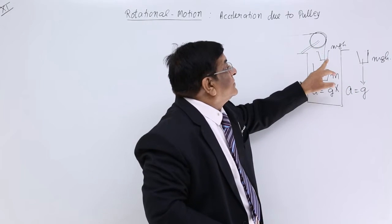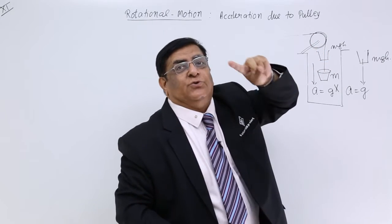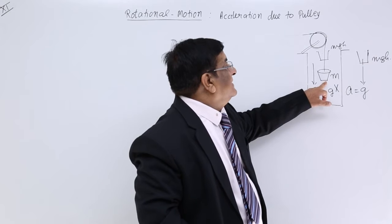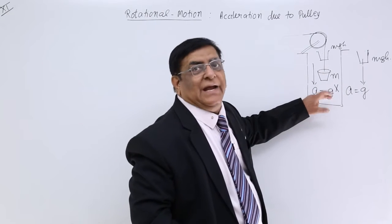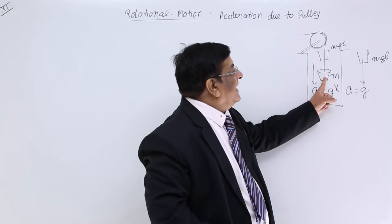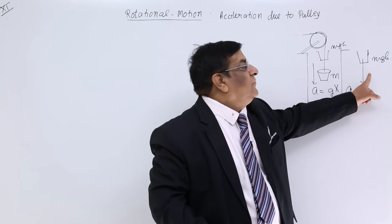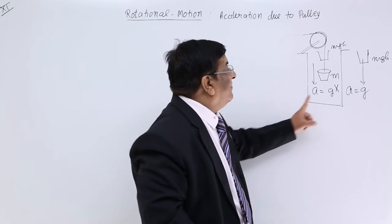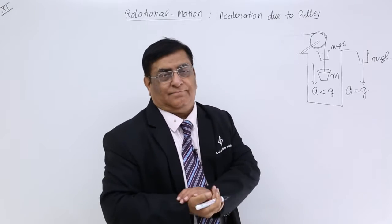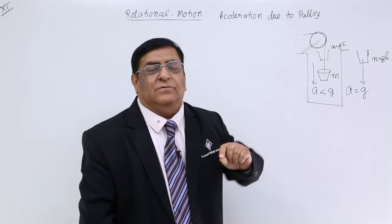Why? This is rotating. So some of the energy of this bucket is absorbed, is taken by this pulley, which is consumed in energy of rotation. So the remaining energy is received by this bucket, and it comes down. And that energy is definitely less than mgh. Therefore, kinetic energy of this bucket is less. This will have more acceleration, and this will have less acceleration. So this acceleration is less than g. This is why its acceleration is less. Energy is taken up by this. Now we have to find out how much is that acceleration.